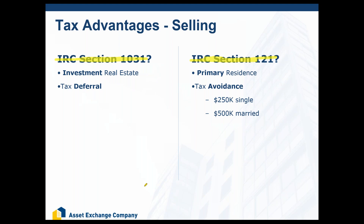If you are going to take advantage of Section 121, you are not going to call me — you're doing a primary residence sale. Section 121 is for those of you who are selling your homes. What Section 121 says is that if you have lived in your home for two out of the past five years, when you sell it you can completely avoid paying taxes on the first $250,000 of gain if you're single, or $500,000 of gain if you are married. You don't need an accommodator — you just file your tax return and claim that exemption.